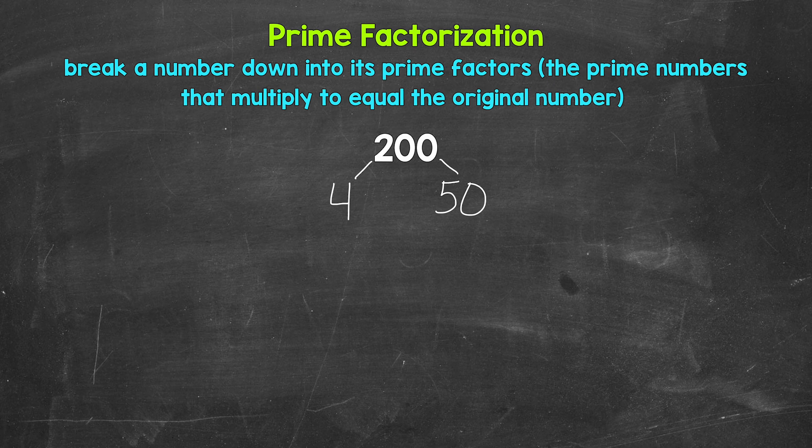Now let's continue to break this down. So we have 4 and 50. Both 4 and 50 are composite numbers, so we can break both of these down. Let's start with 4. We know 2 times 2 is 4, so let's break 4 down into 2 and 2. Now 2 is a prime number, so we are done here and here. We can't break those down any further.